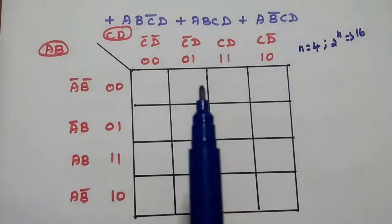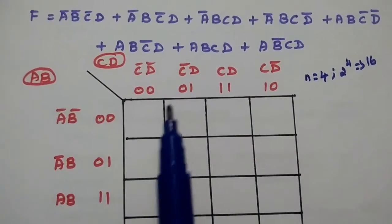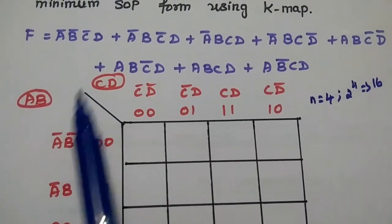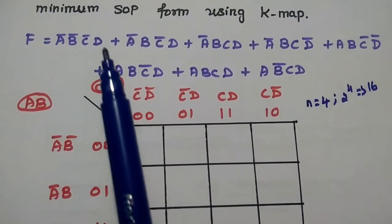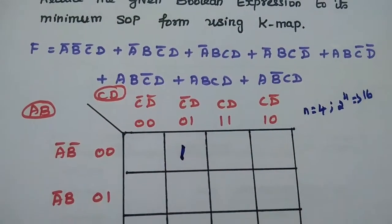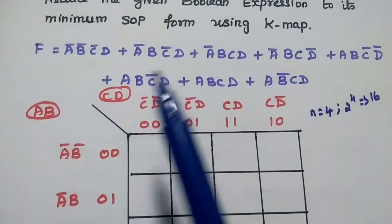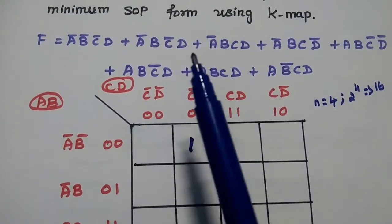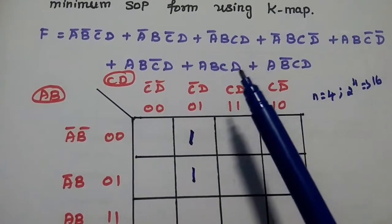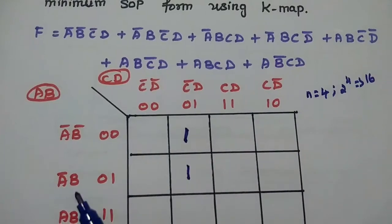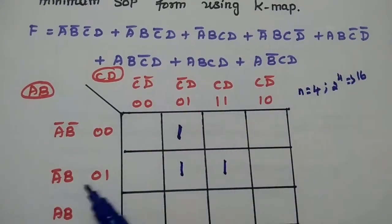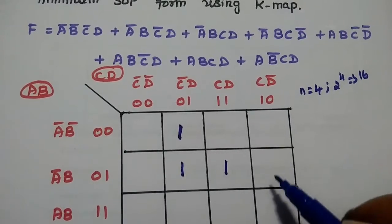After plotting the KMAP, we place the value 1 for each minterm. The first term is A̅B̅C̄D: A̅B̅ is the first row, C̄D is the second column — place 1 there. Next, A̅BC̄D: A̅B is the second row, C̄D is the second column — place 1. Then A̅BCD: A̅B is the second row, CD is the third column — place 1. Then A̅BCD̄: A̅B second row, CD̄ — place 1.